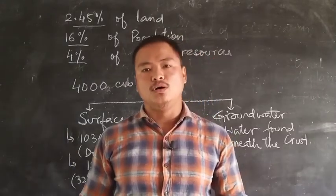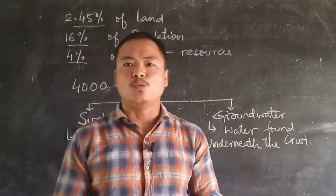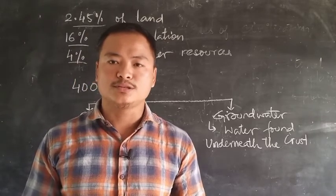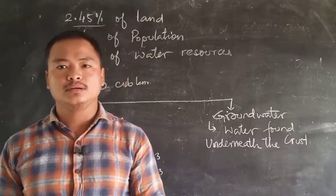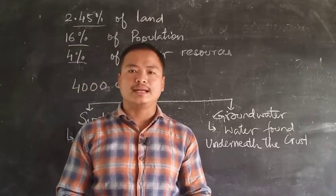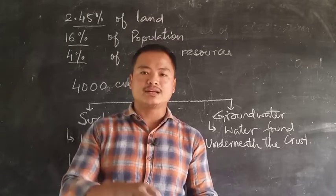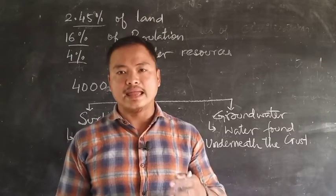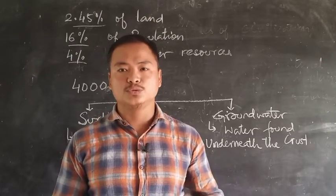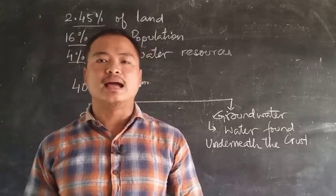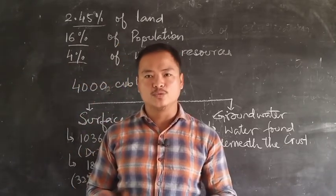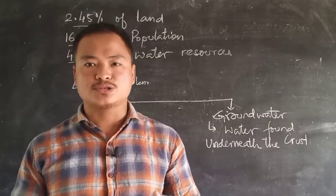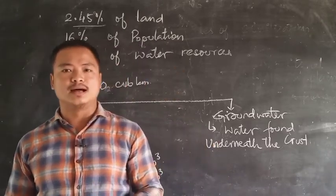Groundwater or underground water is the water that is found underneath the earth's crust. Its source is most likely rainfall, with rainwater percolating under the earth's surface or penetrating the earth's surface in the softer regions mostly. They enter the earth's crust through the permeable layer until they are held by the impervious layer, which does not allow the water to flow further inward. And hence this water is stored in the form of groundwater, also called underground water.